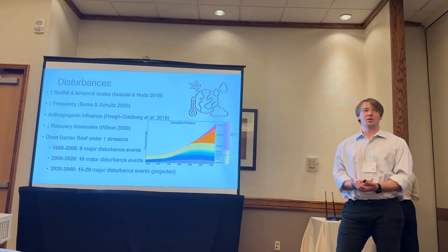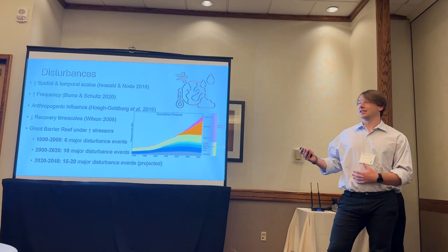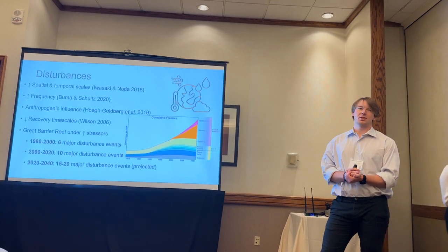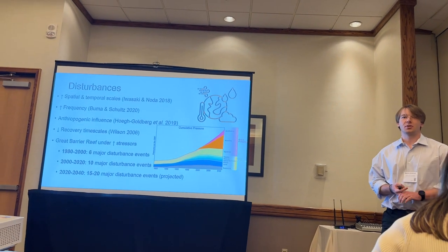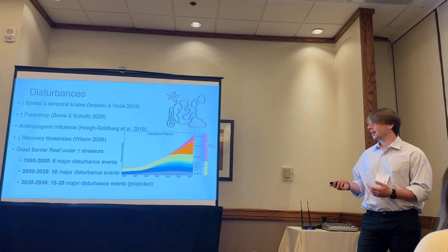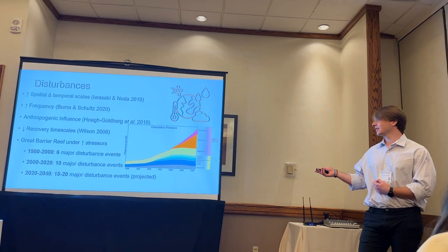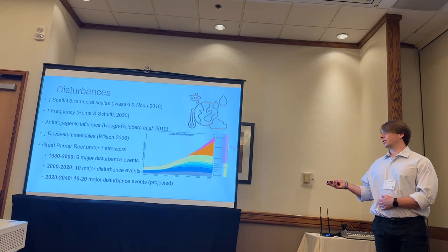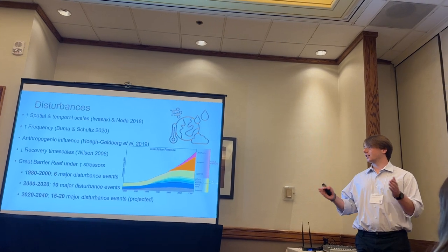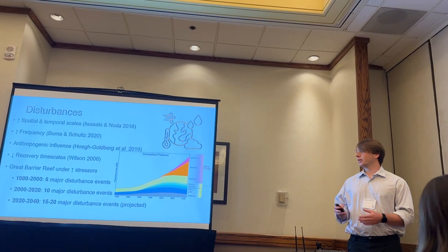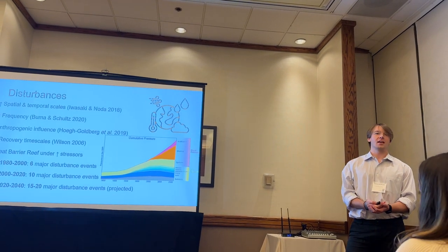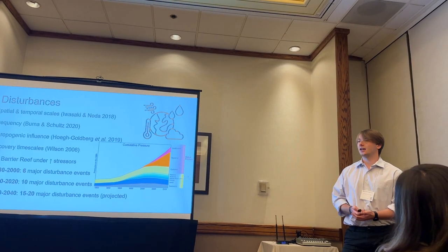To give a little background — as climate change continues to increase the spatial and temporal scales and frequency of disturbance events, combined with anthropogenic influences such as fishing, pollution, and other direct impacts, it really reduces the recovery timescales for coral reefs. Specifically with the Great Barrier Reef, there's been increasing stressors. In the 20 years before the 21st century, there were roughly six major disturbance events; in 2000–2020, roughly 10; and it's projected that in the next 20 years there will be 15 to 20. There's going to be an exponential increase, so it's really important we understand how these coral reefs are changing under these conditions.